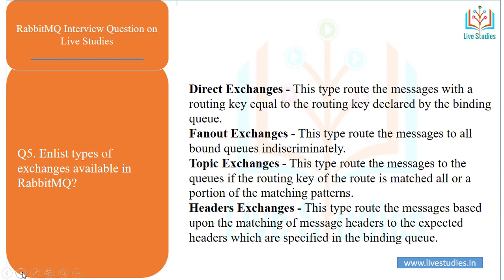Another question: list the types of exchanges available in RabbitMQ. There are four types: Direct, Fanout, Topic, and Header. Direct exchange routes the message with a routing key equal to the routing key declared by the binding queue. Fanout exchange routes the message to all bound queues. Topic exchange routes the message to a queue if the routing key matches all or a portion of the matching pattern. Header exchange routes the message based on matching of the message header to the expected header defined in the binding key.